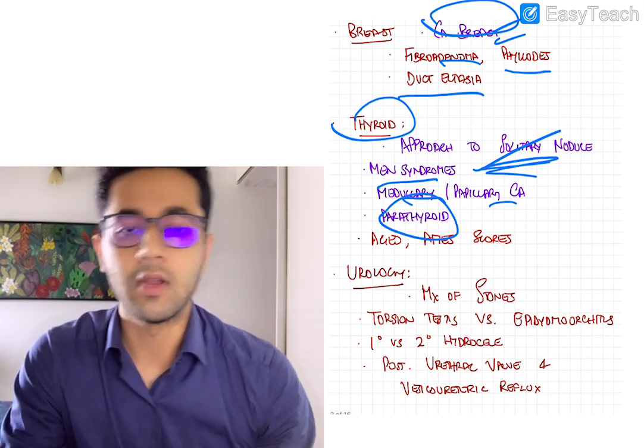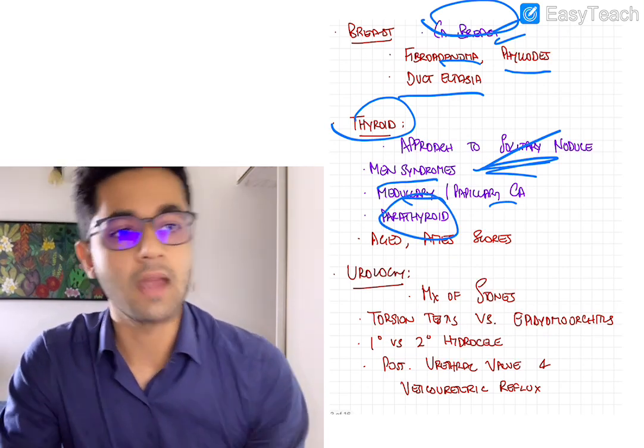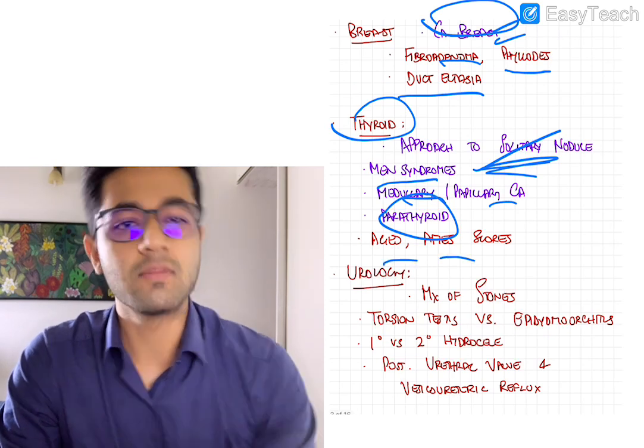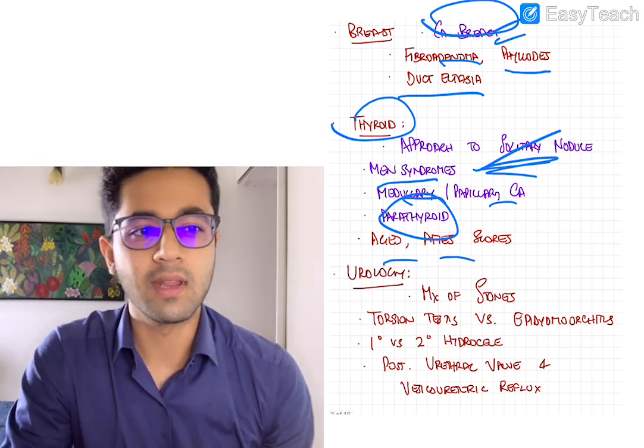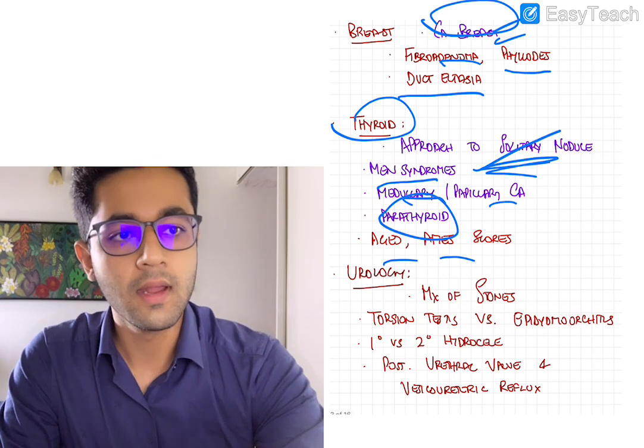Medullary and papillary carcinoma are the more frequently asked carcinomas which come from thyroid. Parathyroid, everything about parathyroid including hyperparathyroidism and hypoparathyroidism to some extent are important. AGIS and AIM scores, good to know but not really a must-know.